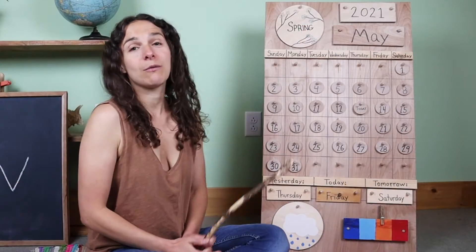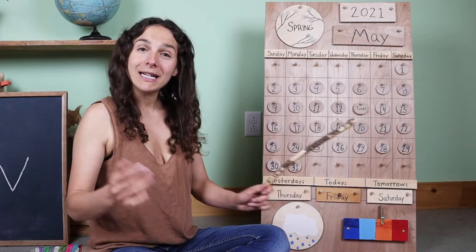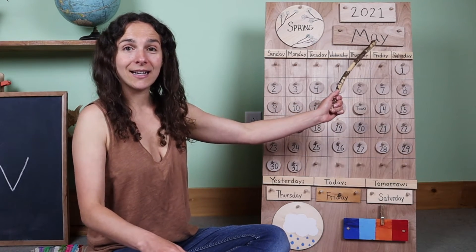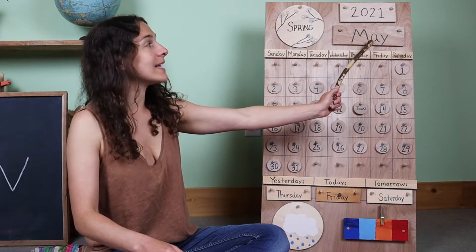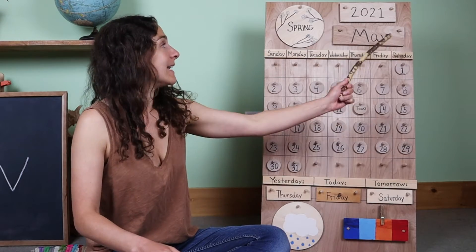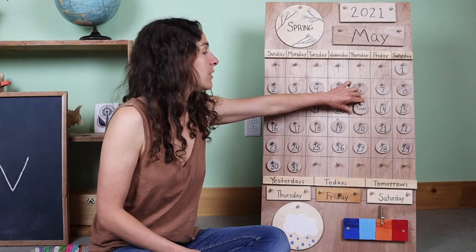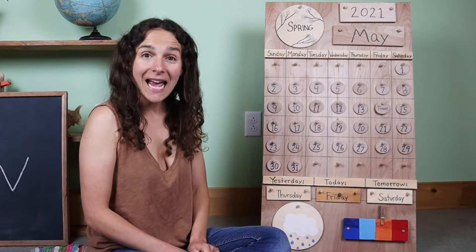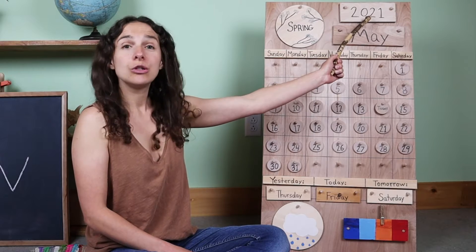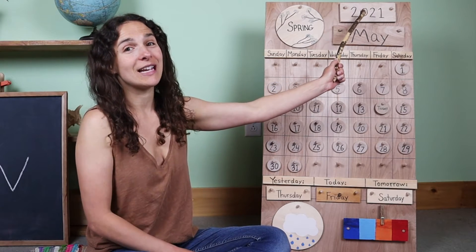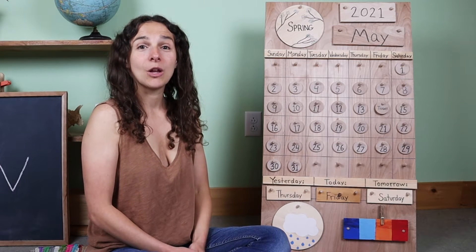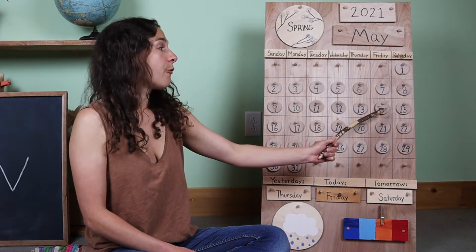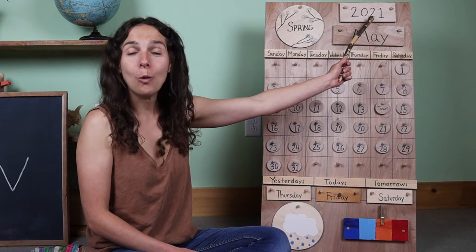Behind me, I have the calendar and weather chart. First, we begin with the date. When we say the date, we start off with the month. The month is right up here. Do you know what the month is? May. You're right. The month is May. And today is May 14th. Yesterday was May 13th, and today is May 14th, 2021. You can also say the year is 2021. Both ways are correct. Will you say the day with me one more time? Today is May 14th, 2021.